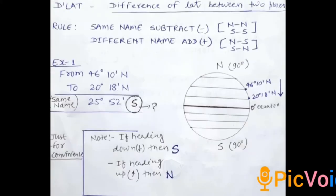First rule is: same name should be subtracted, like North-North or South-South, and different name should be added, like North-South or South-North.